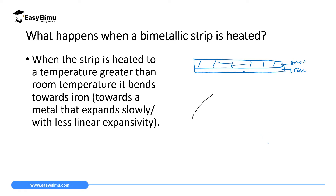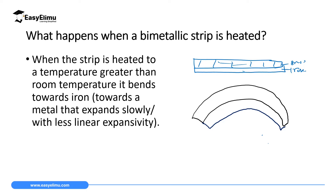When heated, brass is on the outer part of the bimetallic strip because it covers the larger distance, while iron is on the inner side covering the shorter distance. So whenever you heat a bimetallic strip, the metal which expands more will be on the outer part of the curve, and the one which expands less will be on the inner part.